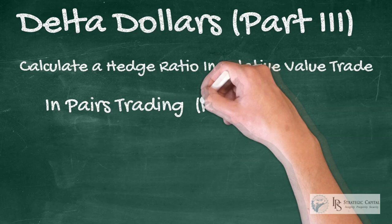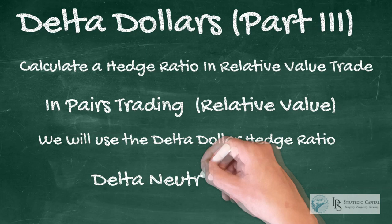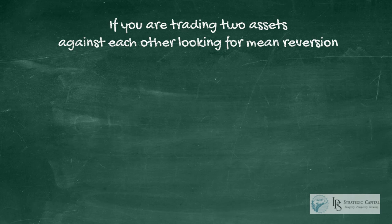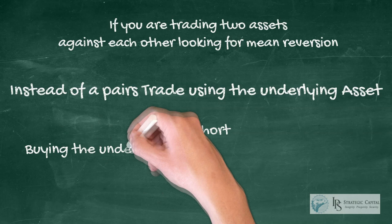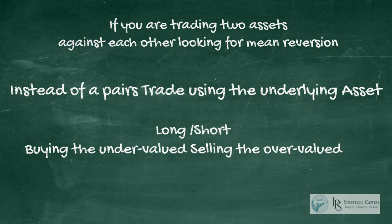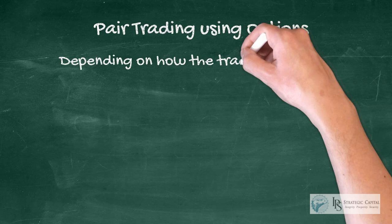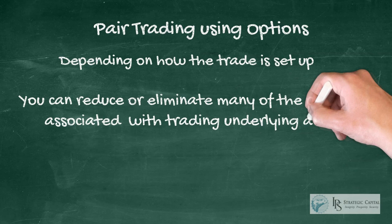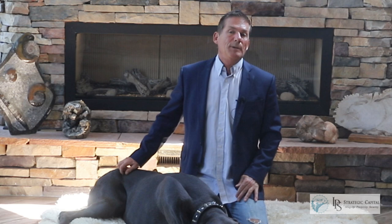We want to calculate the hedge ratio in a relative value trade using Delta Dollars to figure out how to put us in a Delta Neutral position. If you are trading two assets against each other looking for mean reversion, instead of doing a very popular pairs trade — going long one asset and short another — we can use Optionality, which is a better methodology. Depending on how the trade is set up, you can reduce or eliminate many of the problems associated with pairs trading using the underlying asset, as well as improve your hit ratio.